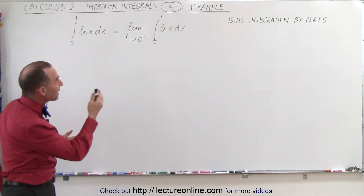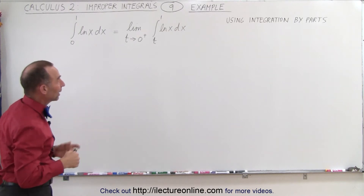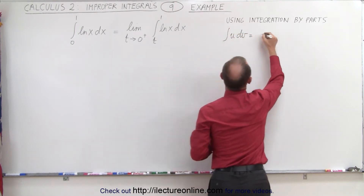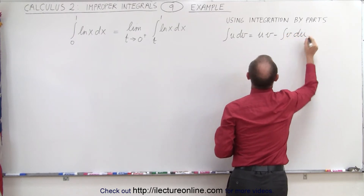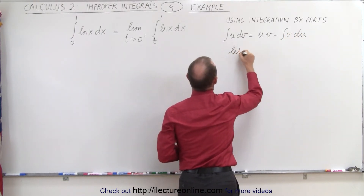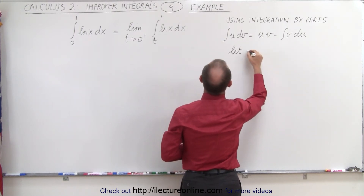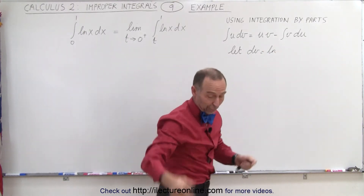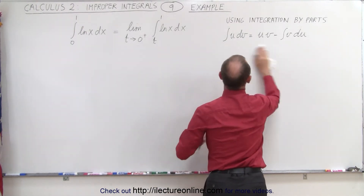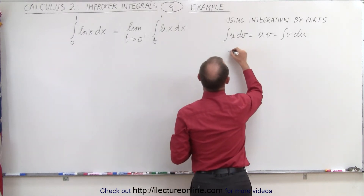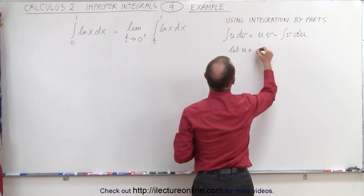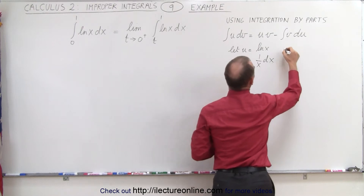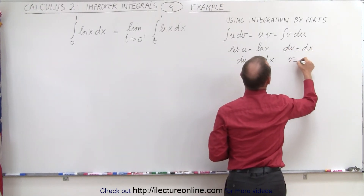On top of that, we have to use the integration by parts technique to integrate the natural log of x. The formula is: the integral of u dv equals u times v minus the integral of v du. Now, we can't let dv equal the natural log of x because that's the one we can't integrate — that would not help us. Instead, let u equal the natural log of x, so du equals 1 over x dx. And let dv equal dx, so v equals x.